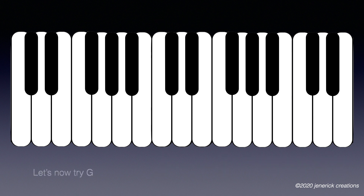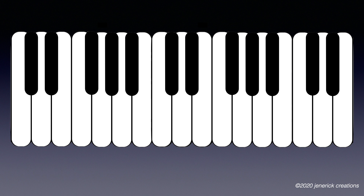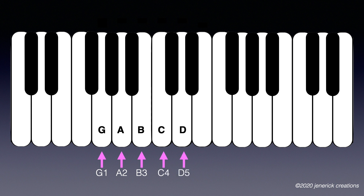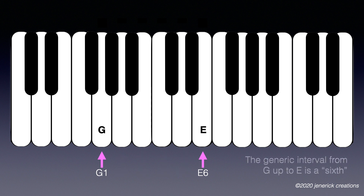Now let's try G up to E. G is 1, A is 2, B is 3, C is 4, D is 5, E is 6. The generic interval from G up to E is a sixth.